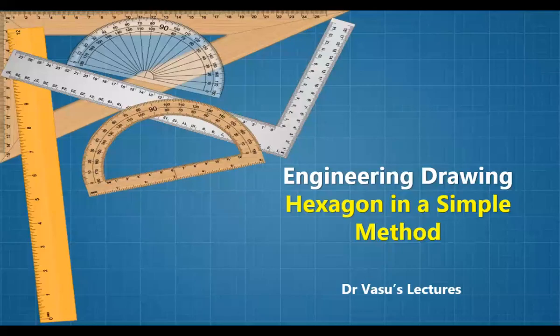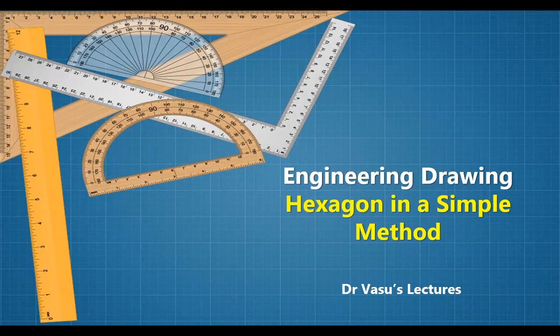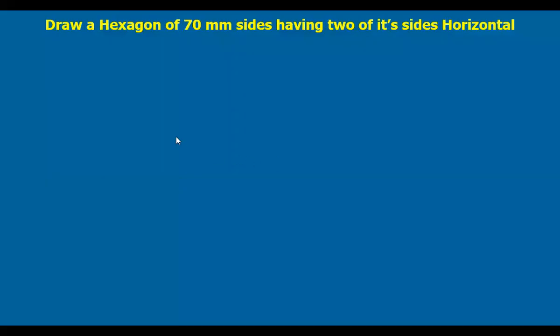Hi, welcome back to Engineering Drawing. I'm Dr. Vasu, and I'm going to tell you a very simple method to draw a hexagon. Here I want to draw a hexagon of 70mm sides having two of its sides horizontal. If you have observed the hexagon, either two sides will be horizontal or vertical.